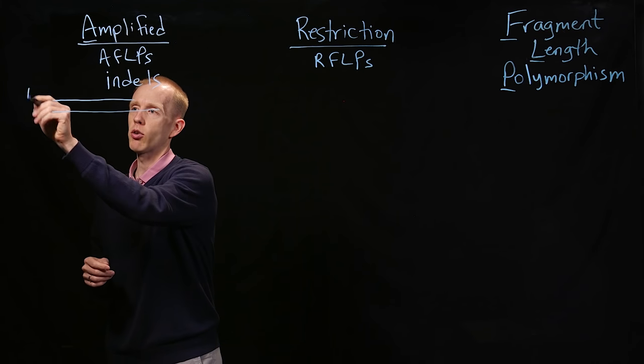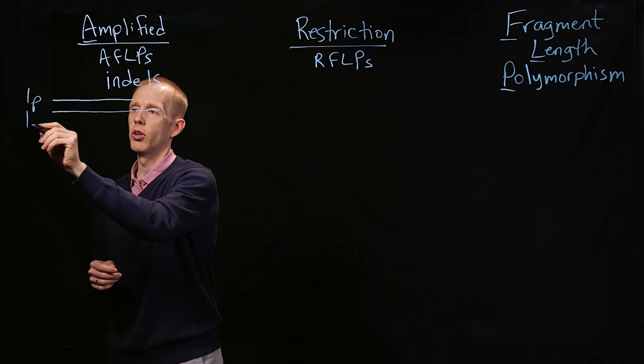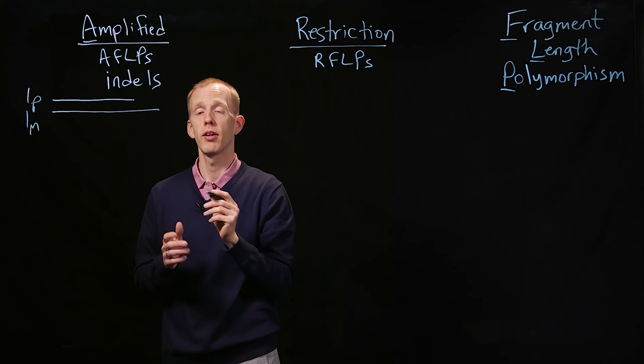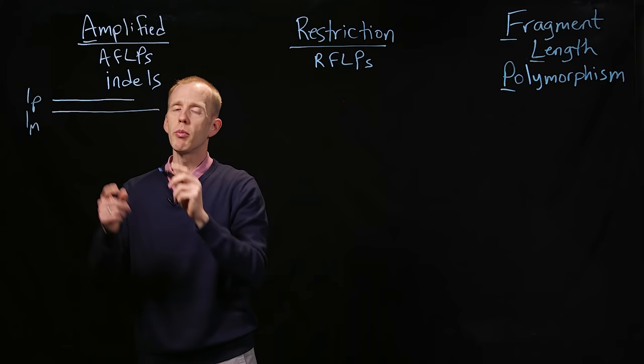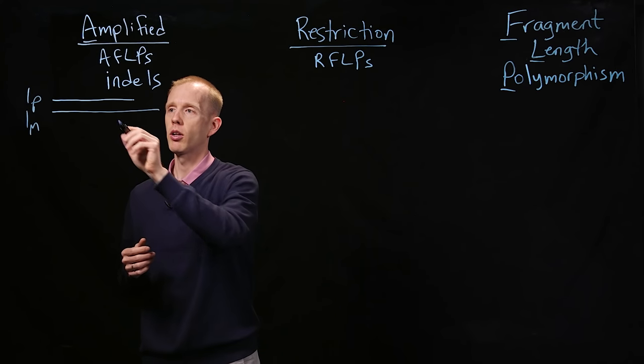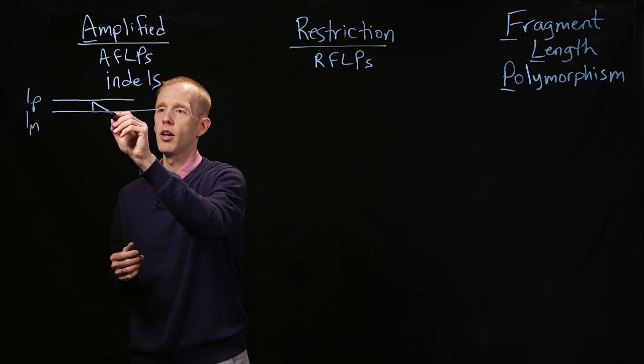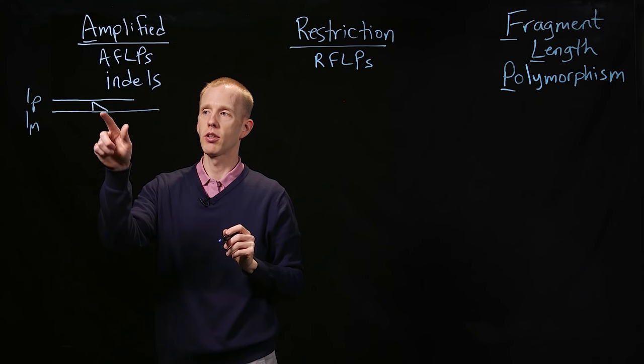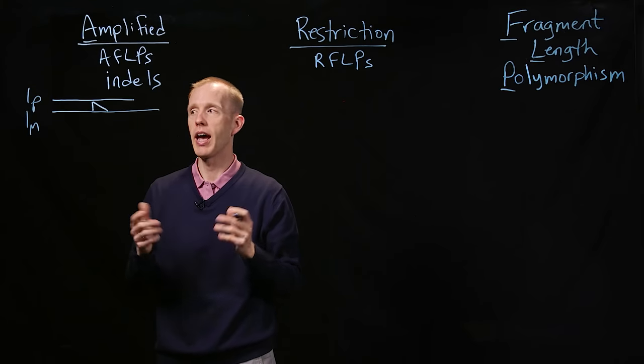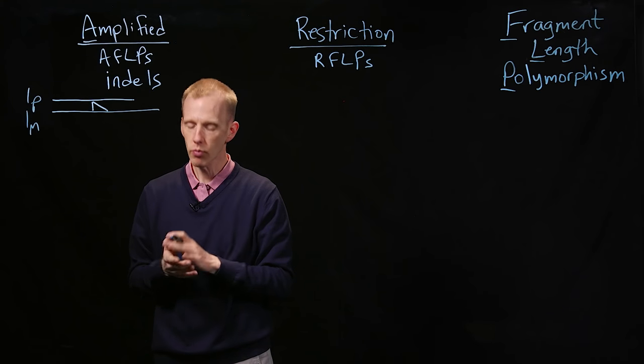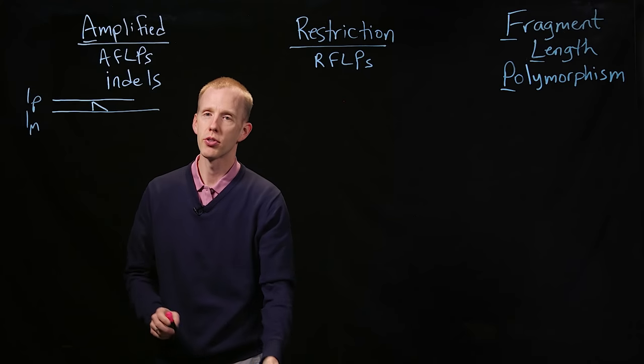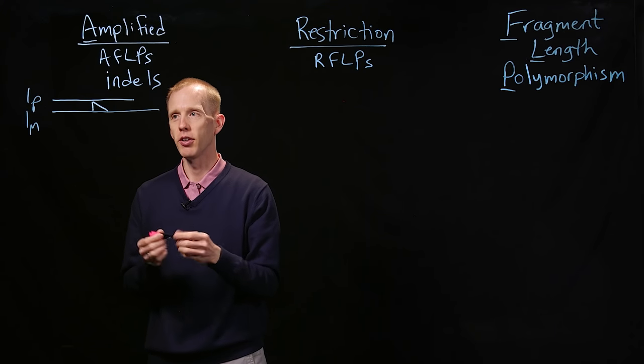When you look at the copy of, say, chromosome 1 from dad, one paternal, and chromosome 1 from mom, one maternal, the maternal copy of the chromosome might be a little bit longer, and that might suggest that she has a part of the chromosome that's missing, absent, from dad's chromosome. And what we can do is use PCR primers to detect this difference.